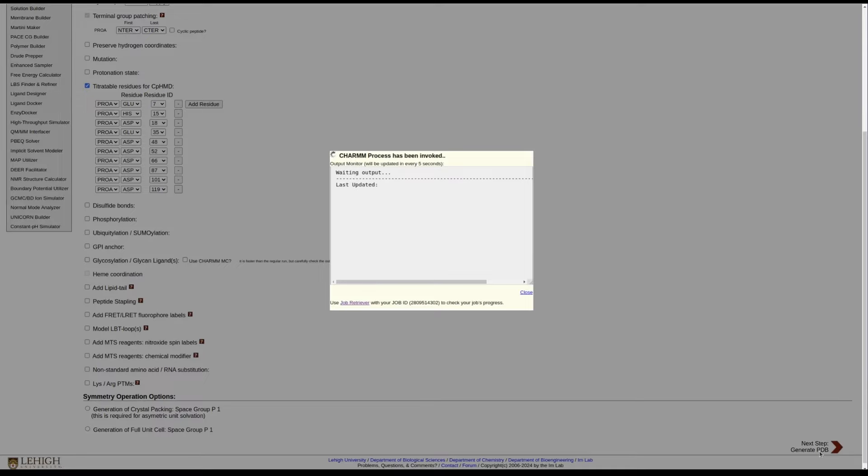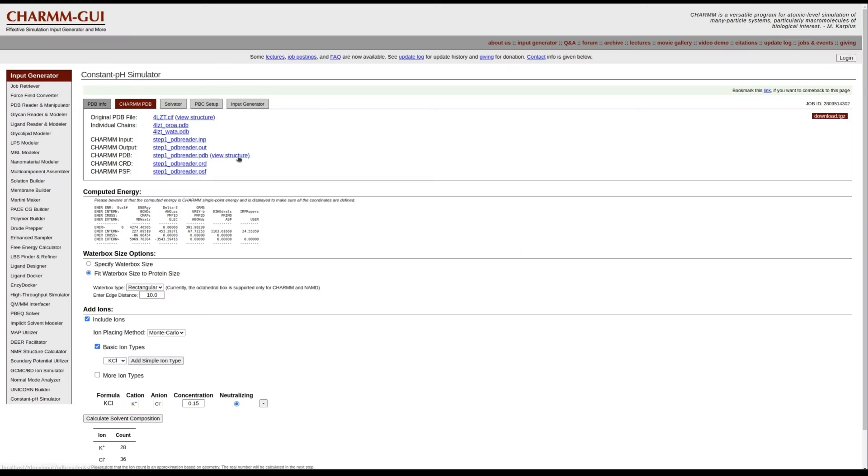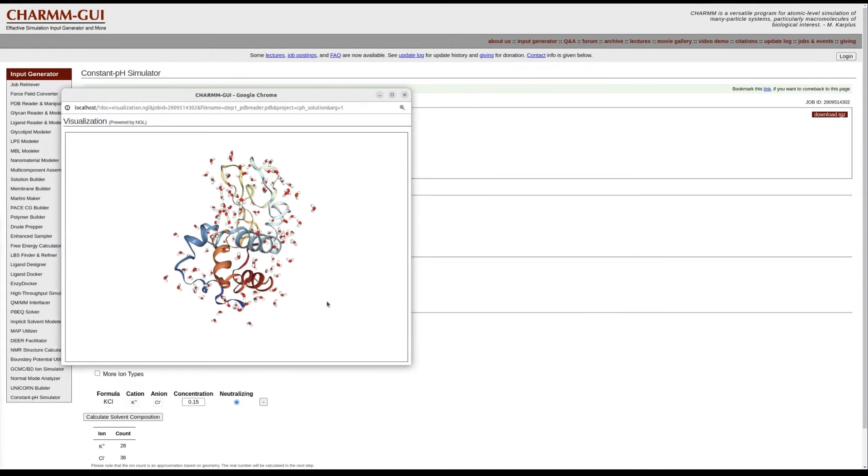Glutamate 7, histidine 15, aspartate 18, glutamate 35, and aspartate residues 48, 52, 66, 87, 101, and 119. Then click Next to generate a CHARMM-compatible PDB file.